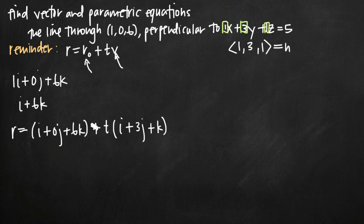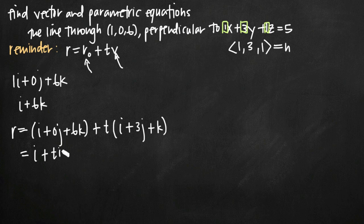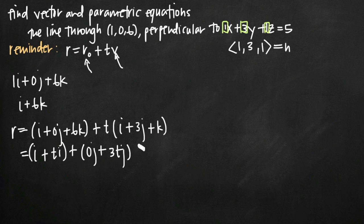Now I need to simplify this equation by grouping my components together — my i's, j's, and k's. I distribute t across i plus 3j plus k and group with terms from the first vector: (i plus ti) for the i terms, (0j plus 3tj) for the j terms, giving 3tj, and (6k plus tk) for the k terms.